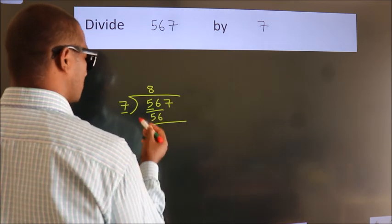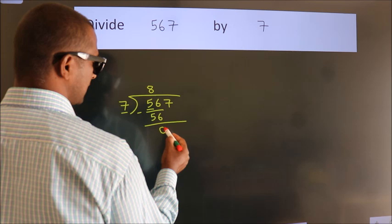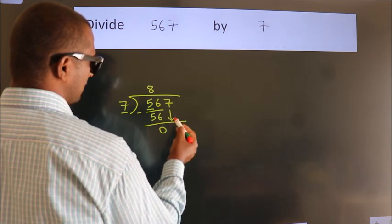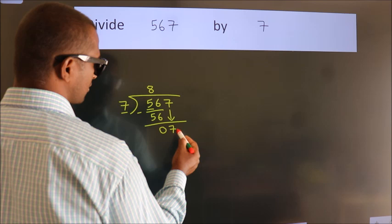Now we should subtract. We get 0. After this, bring down the beside number, so 7 down. 7.